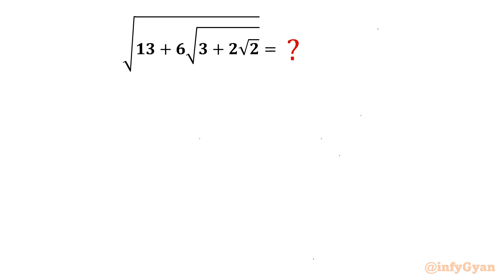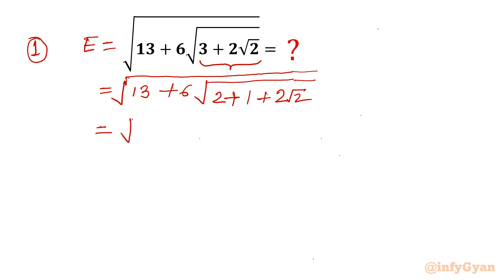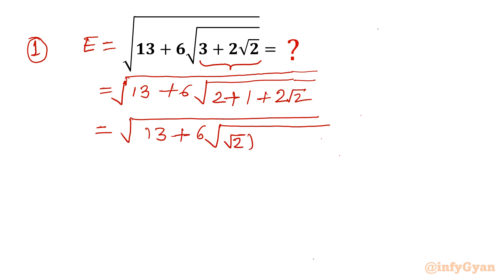Let's begin with our very first mathematical challenge from nested radicals. I will begin with the radicand term, writing our expression as square root of 13 plus 6 times square root of something. I can see that 3 can be written as 2 plus 1, which gives us 2 root 2. We can write 2 as root 2 whole squared, 1 as 1 whole squared, and 2 root 2 as 2 times root 2 times 1.